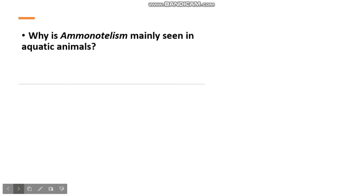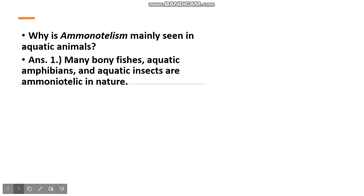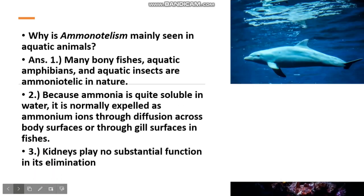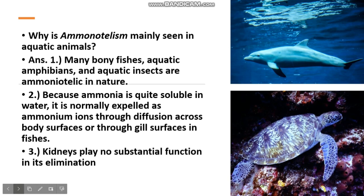Why is ammonotelism mainly seen in aquatic animals? Many bony fishes, aquatic amphibians, and aquatic insects are ammonotelic in nature. Because ammonia is quite soluble in water, it is normally expelled as ammonium ions through diffusion across body surfaces or through gill surfaces in fishes. Kidneys play no substantial function in its elimination.